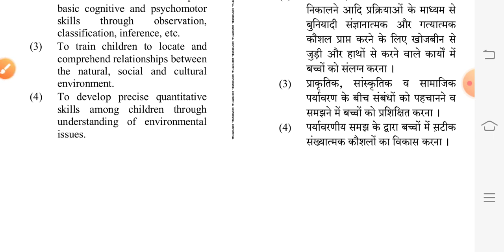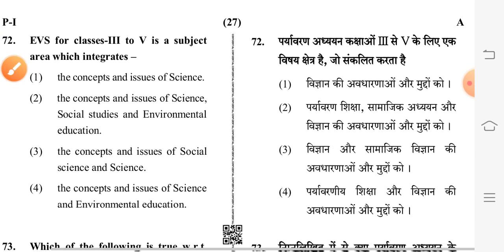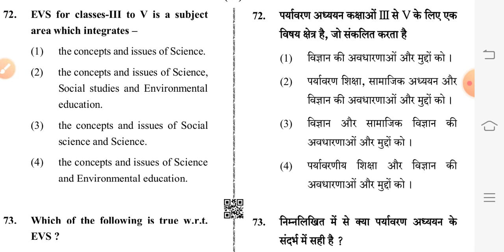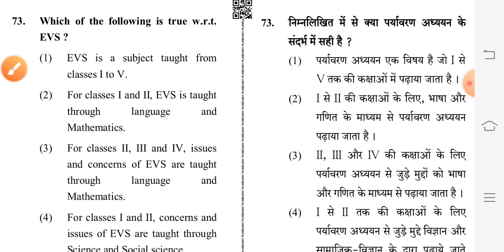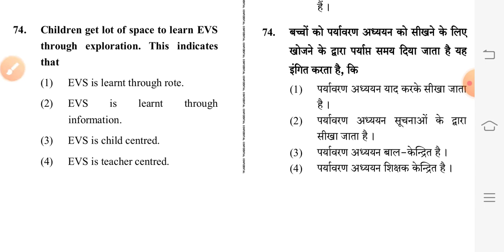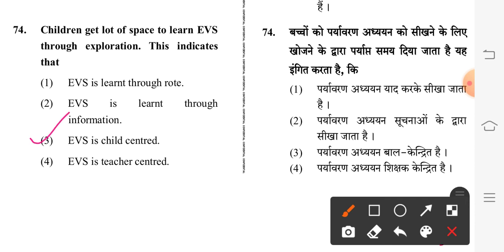Question 72: EVS for classes 3 to 5 is a subject area which integrates — second option is correct: the concepts and issues of science, social studies, and environmental education. Question 73: which of the following is true with respect to EVS? Second option is correct: for classes 1 and 2, EVS is taught through language and mathematics. Question 74: children get a lot of space to learn EVS through exploration — this indicates that EVS is child-centered.